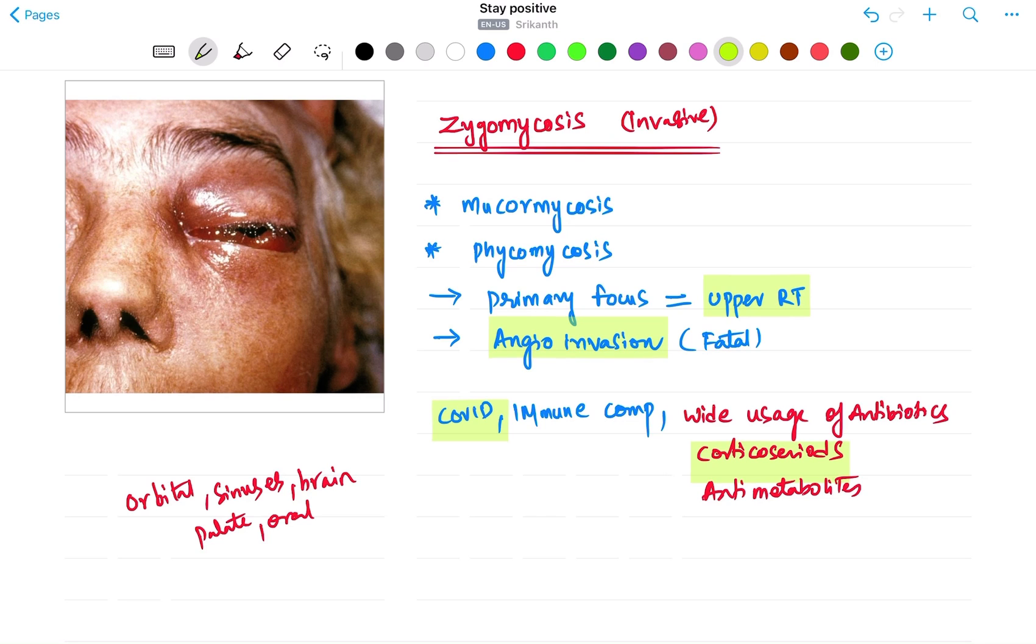So this is basically due to a fungal infection which is a chronic one. Basically, whenever you have a chronic infection like extended or prolonged over a period of time, then you can think of fungal infection. And this fungal infection is nothing but mucormycosis, which is also called zygomycosis. So please do make a note of the terms which are common terms which are useful for this infection.